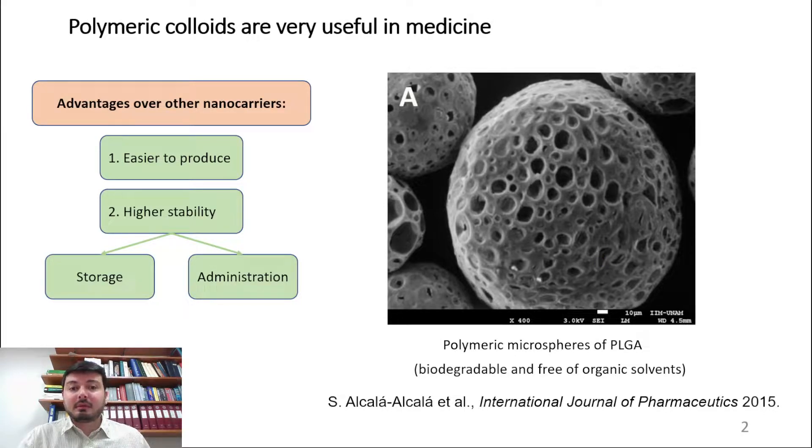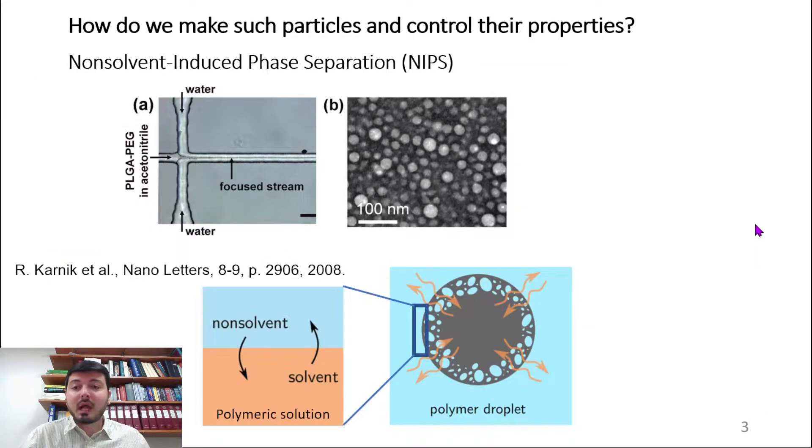Polymeric colloids are very useful in medicine. The figure you see here shows polymeric microspheres of PLGA used to carry proteins in the body. They're biodegradable and free of organic solvents, so they're really biocompatible. They have several advantages over other nanocarriers like micelles. For example, they're relatively easier to produce and they have much higher stability, which helps in storing and administering them in the body.